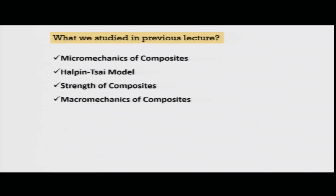In this module so far, we have covered the micro mechanics of composites. We have covered some empirical relationships — the rule of mixture — and then shown that in the transverse direction this does not work, so we used the Halpin-Tsai model, which is a semi-empirical relationship. We also talked about how to estimate the strength of composites, where the key assumption is that when the fiber fails, the composite fails. As a result, we derive the strength by finding out the strain at which failure occurs and then getting the strength of the composites.